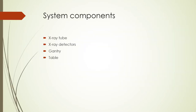Let's look at the X-ray system components. The main components are: the X-ray tube, usually a high-power tube of 60 kW or higher; X-ray detectors; a gantry; and a patient table. We shall learn about each of these components in the next few slides.